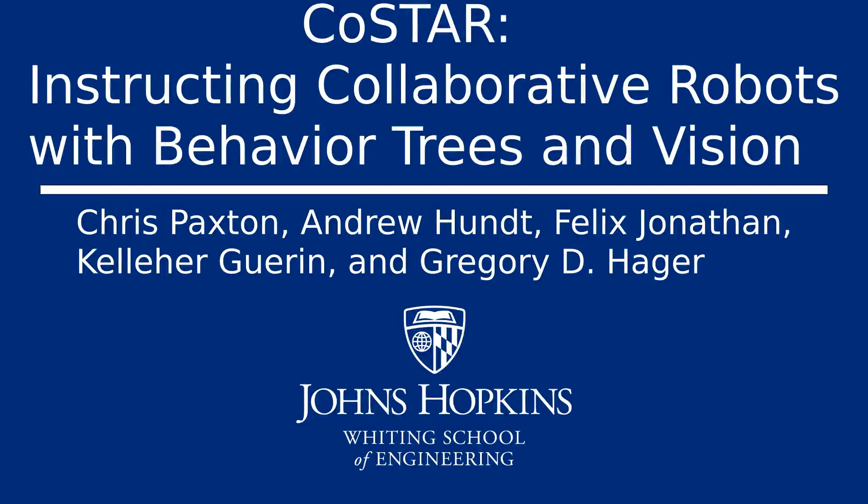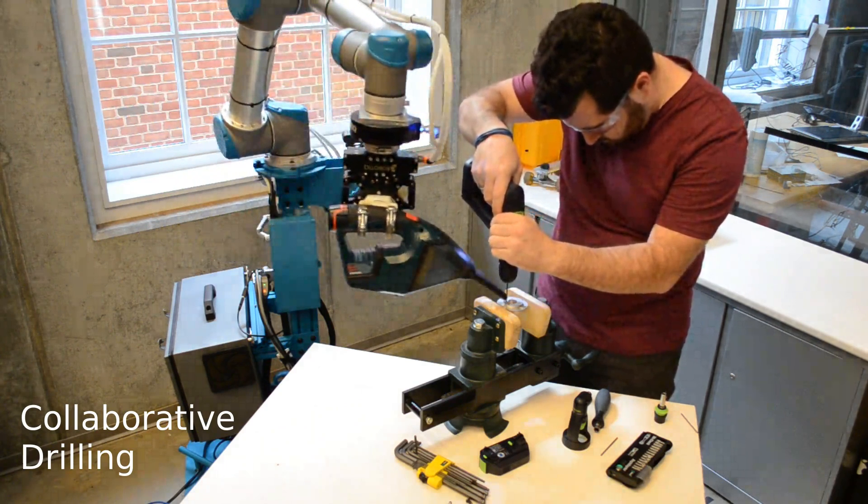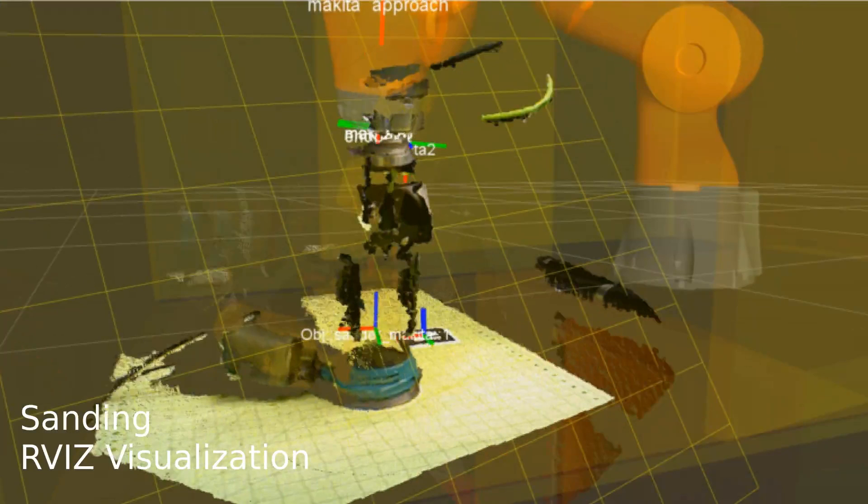CoStar is the collaborative system for task automation and recognition. Its goal is to make robots into flexible and intelligent assistance for small manufacturers and other non-expert end users that are capable, usable, and robust to changes in the environment.